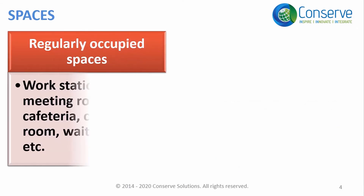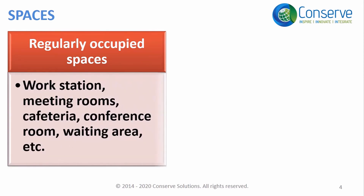We will come across the term 'regularly occupied space' in many credits, so it is better to understand what spaces are included. Regularly occupied spaces include workstations, cabins, meeting rooms, cafeteria, conference rooms, waiting areas, etc.